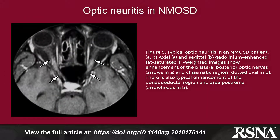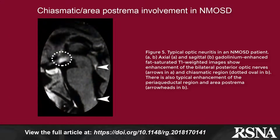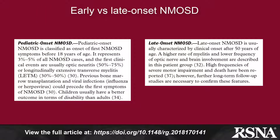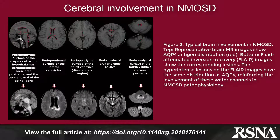Particular involvement of the optic nerves, spinal cord, brain stem, diencephalon, and cerebrum is seen. The clinical presentation and distribution of imaging findings of early pediatric onset disease versus late onset disease are discussed, followed by a detailed review of the MR findings in the CNS, particularly the optic nerve and spinal cord lesions encountered.